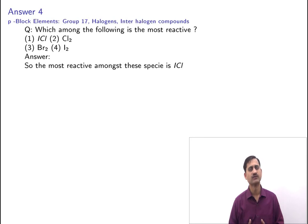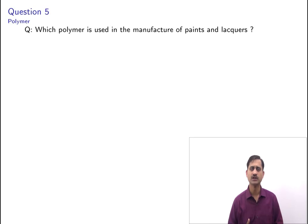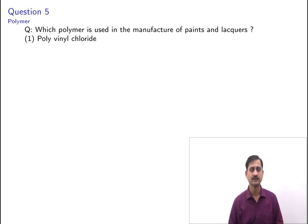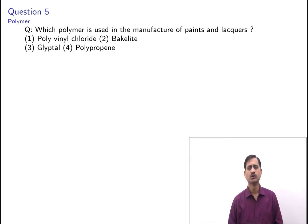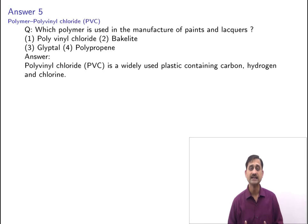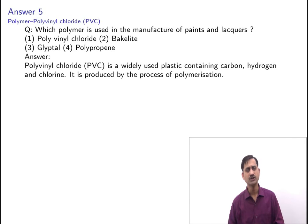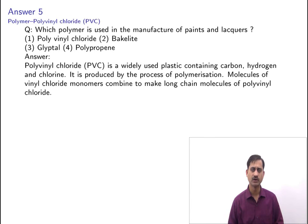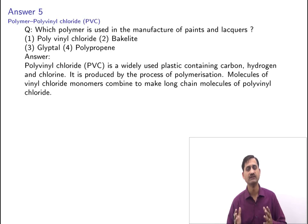The next question is from polymers. It asks: which polymer is used in the manufacture of paints and lacquers? Options are polyvinyl chloride, bakelite, glyptal, or polypropene. PVC is a widely used plastic produced by polymerization of vinyl chloride monomers into long chain molecules — relatively cheap and easy to mold. Bakelite is a thermosetting phenol-formaldehyde resin used for its electrical non-conductivity and heat-resistant properties in electrical insulators, radio and telephone casings, kitchenware, and other products.